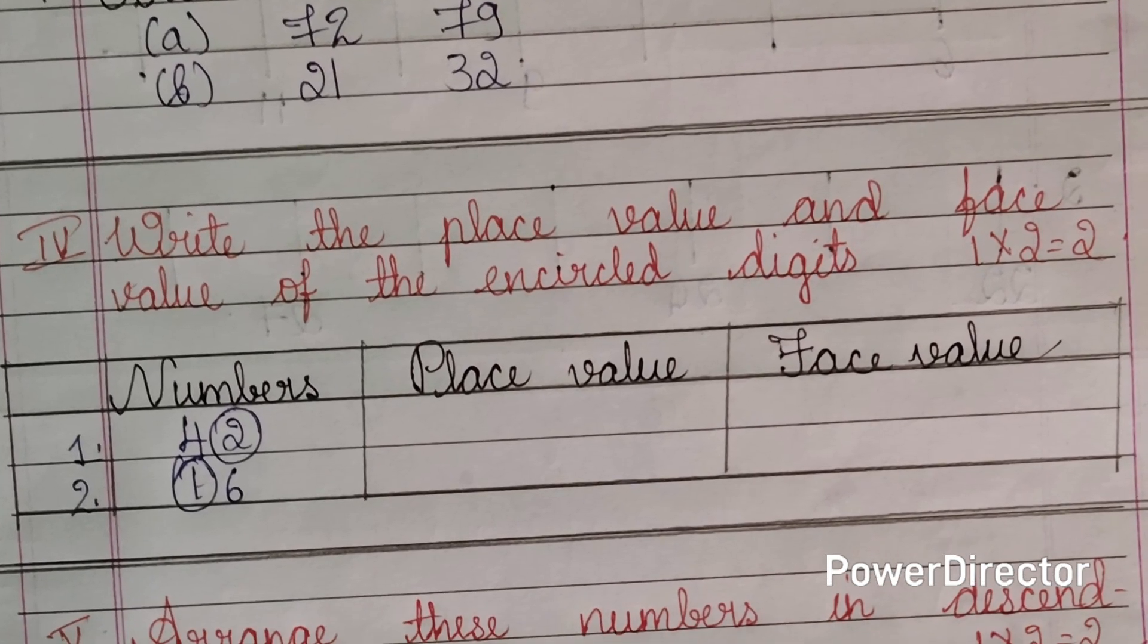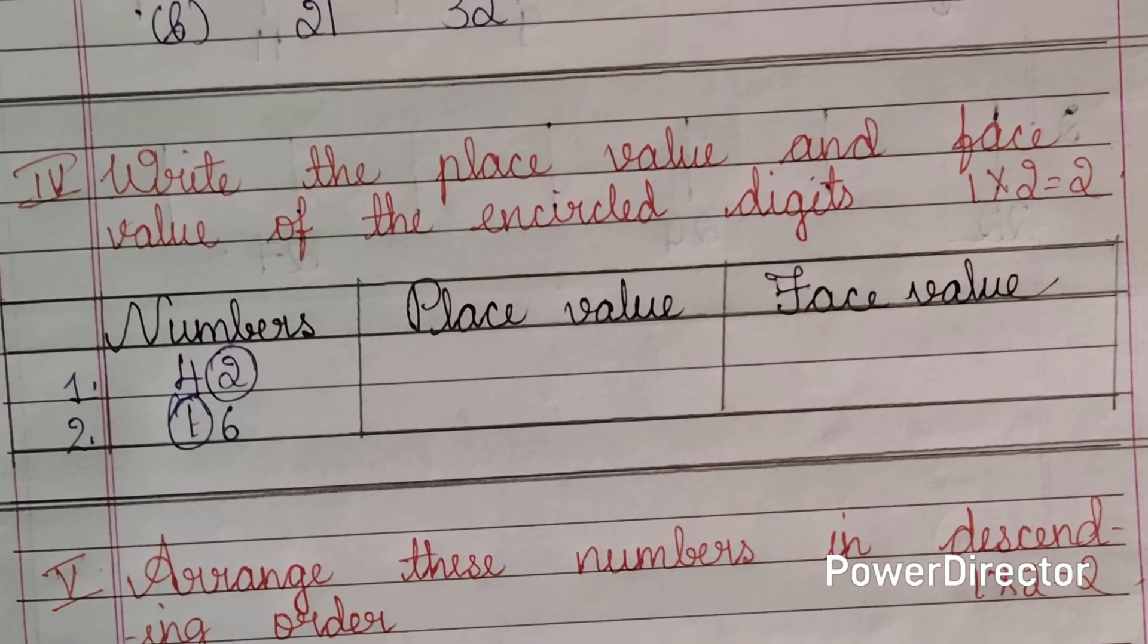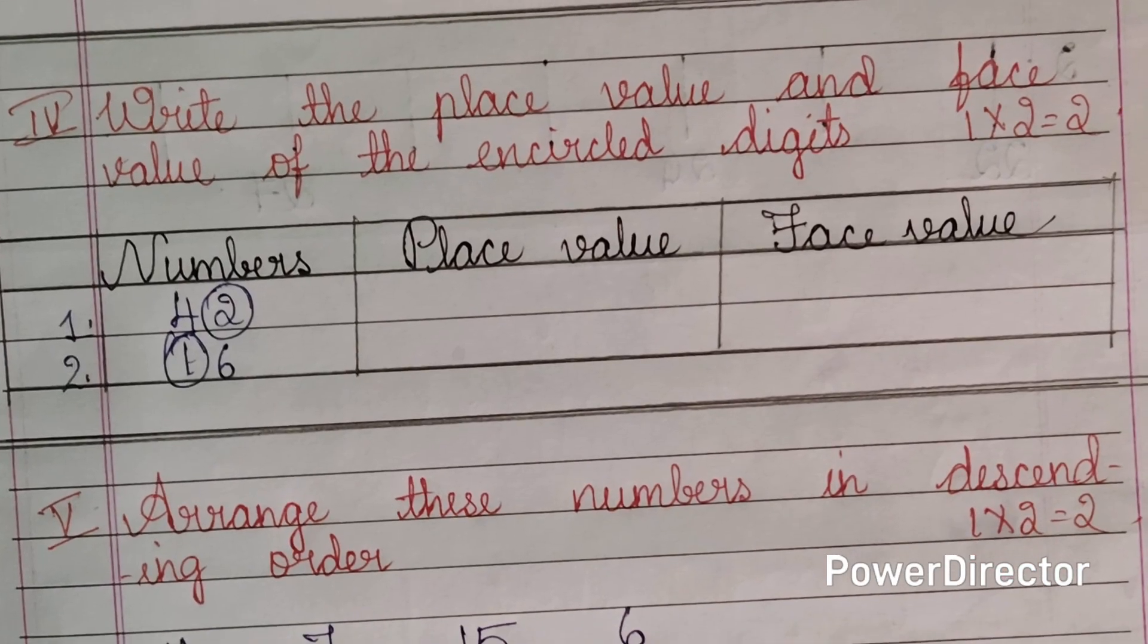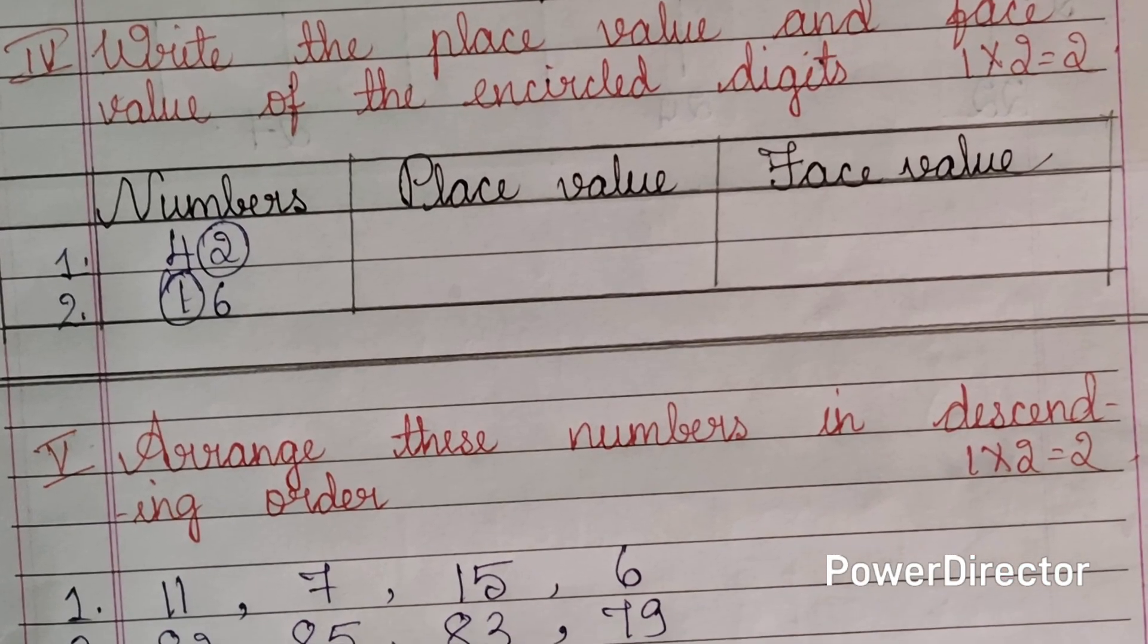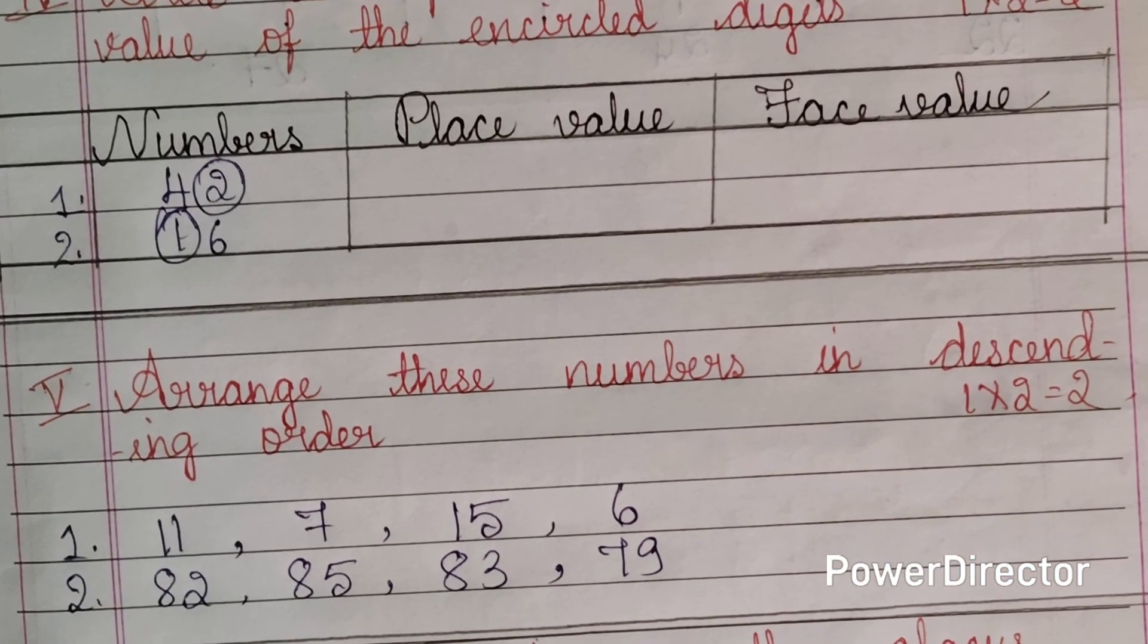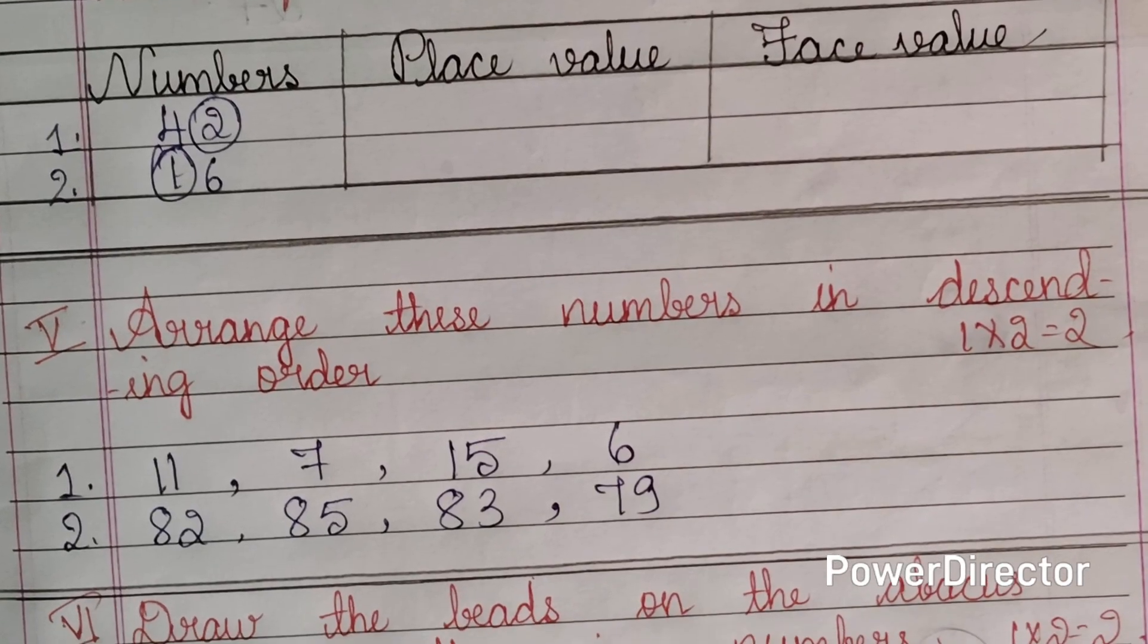Fourth main, write the place value and face value of the encircled digits. Two questions are there, each question carry one mark, two mark for this main. You need to write place value and face value of the numbers which has been circled.